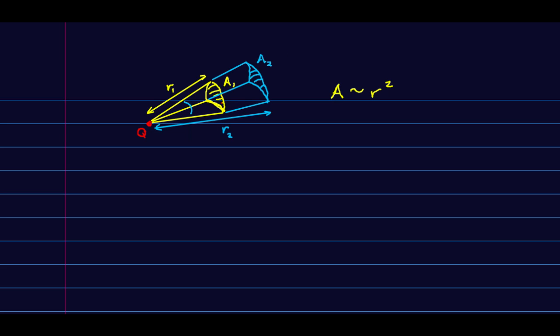Now the field, there's a field e1 through the area a1. And similarly, there's a field e2, which will be weaker through a2. But we know that the field magnitude goes as 1 over r squared. And so now when we multiply the area and the e field, we can see that the flux through 1 has to equal the flux through 2.